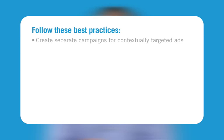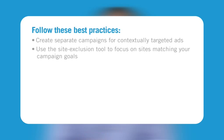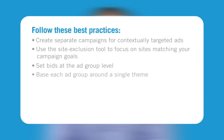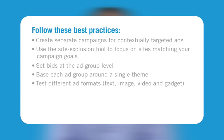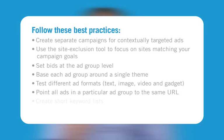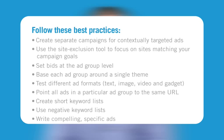Now you have learned how to create an effectively contextually targeted ad campaign. Follow these best practices: create separate campaigns for contextually targeted ads; use the site exclusion tool to focus on sites matching your campaign goals; set bids at ad group level; base each ad group around a single theme; test different ad formats — text, image, video and gadget; point all ads in a particular ad group to the same destination URL; create short keyword lists; use negative keyword lists; and write compelling, specific ads.